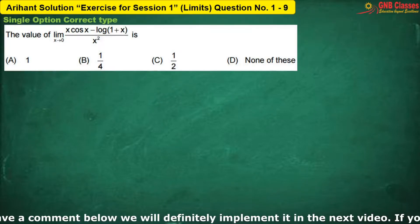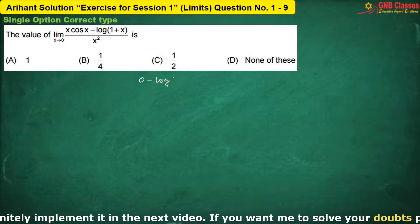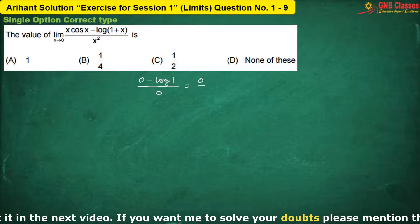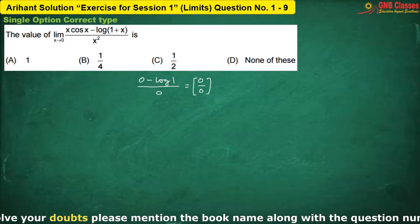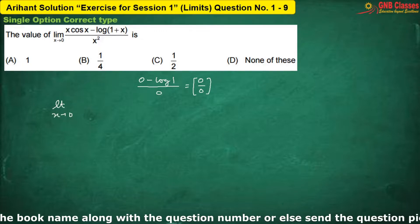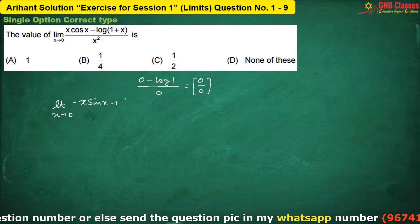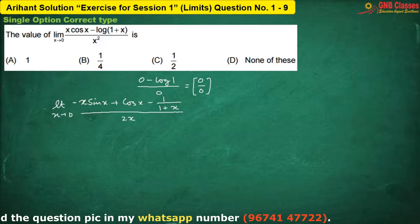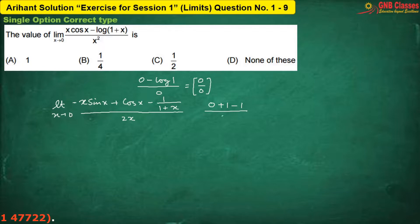In this problem, again if we put the limit, the limiting form is coming to 0 by 0. Hence, again we can apply L'Hôpital's rule — differentiating the numerator and denominator separately. Now, if I put the limiting value again, we are getting 0 in the numerator and 0 in the denominator, which is again 0 by 0 form.